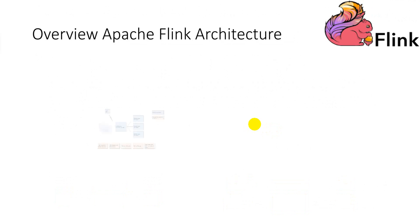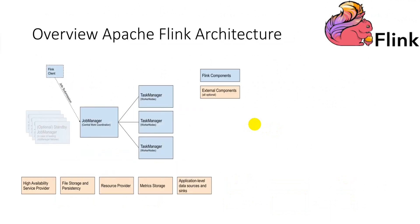This figure is showing the building blocks of every Flink cluster. There is always a client running. It takes the code of the Flink application, transforms it into a job graph, and submits it to the job manager. The job manager distributes the work onto the task managers.